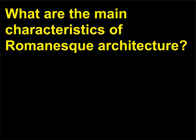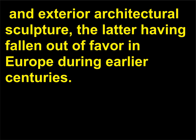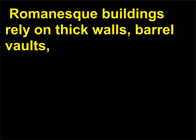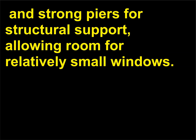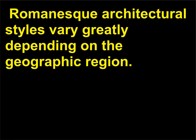What are the main characteristics of Romanesque architecture? Romanesque architecture is notable for its use of round arches, military strength, and exterior architectural sculpture, the latter having fallen out of favor in Europe during earlier centuries. Romanesque buildings rely on thick walls, barrel vaults, and strong piers for structural support, allowing room for relatively small windows. As Europe was a culturally and politically fragmented landscape during the medieval period, Romanesque architectural styles vary greatly depending on the geographic region.